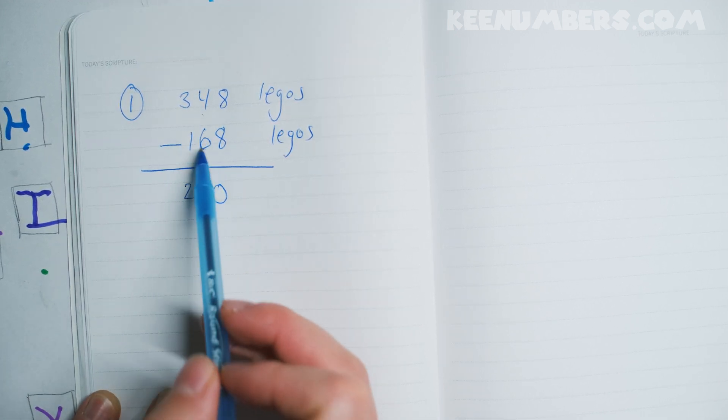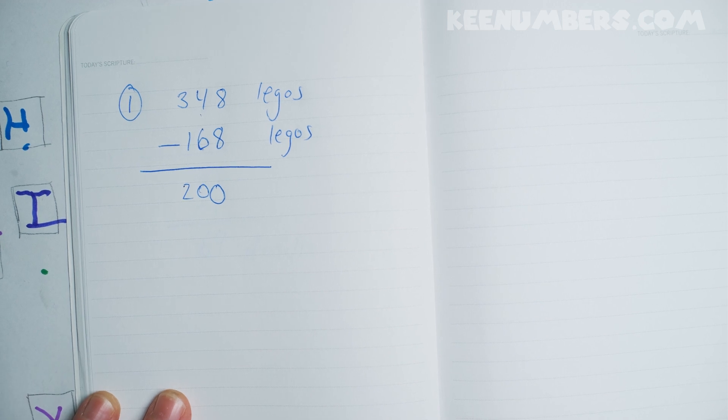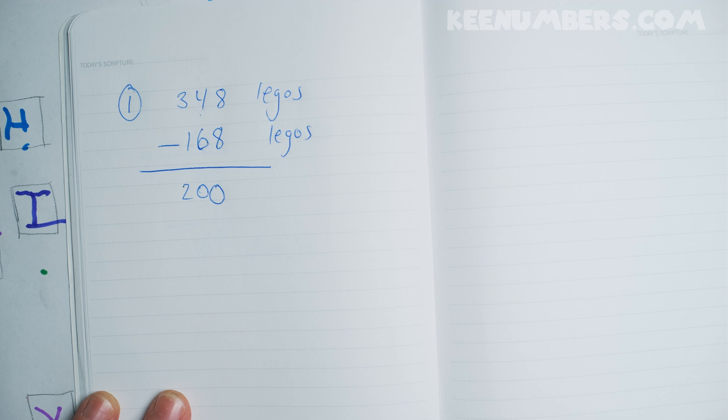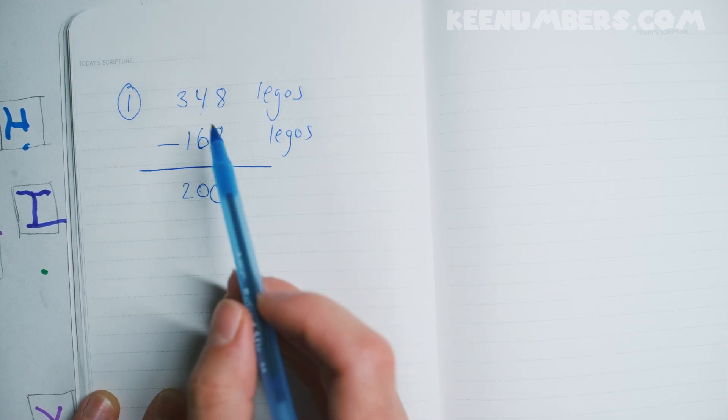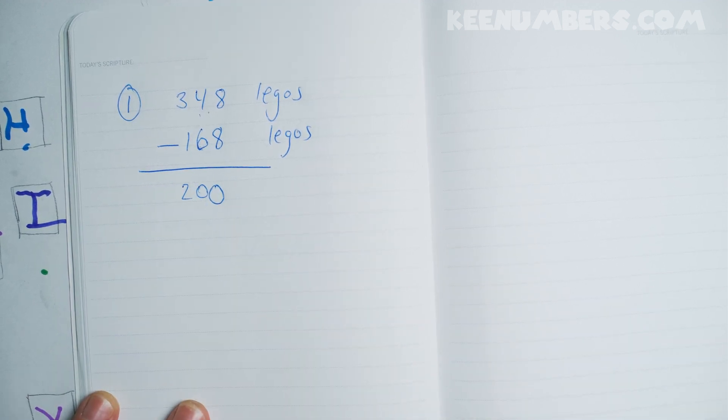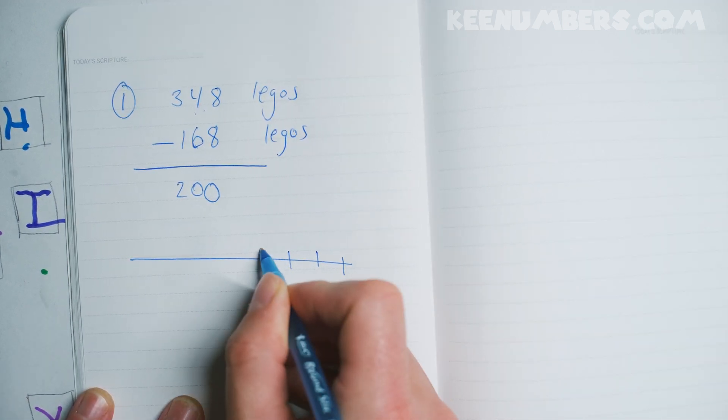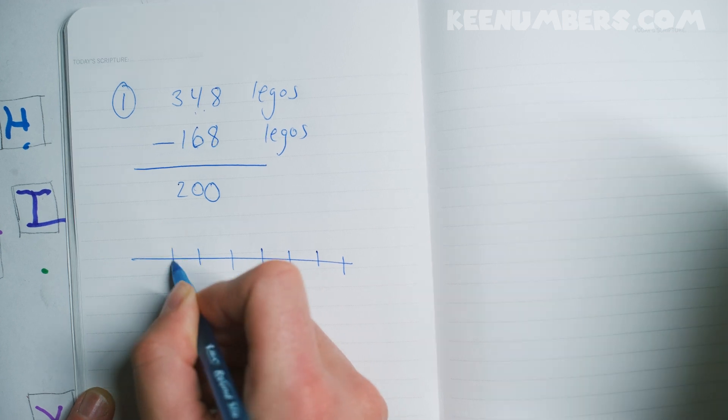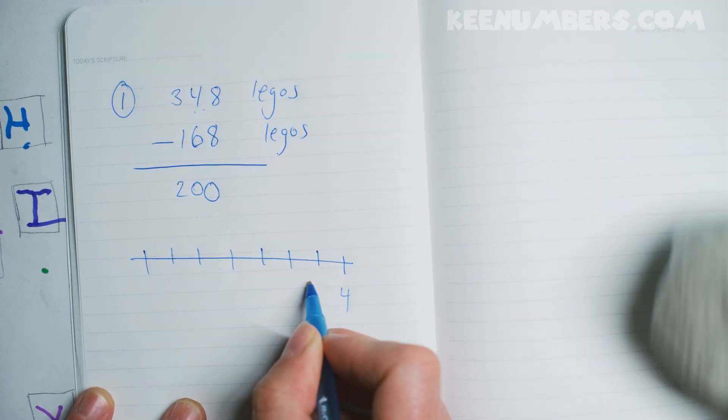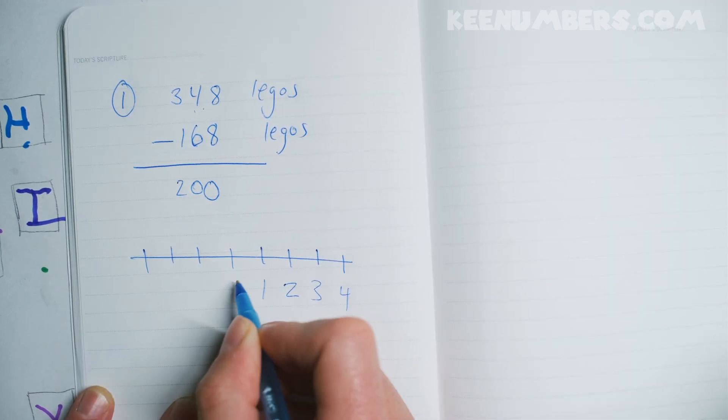Or you could just say, what's 4 minus 6? Do we need to borrow from the 10th place, because he doesn't know what it is. Well, what's 4 minus 6? Do we need to borrow from the 10th place? Or, we can just go to the number line. That's a great idea. And go backwards. I'm on Pirate's arm. Yeah, let's do it Pirate Sam.